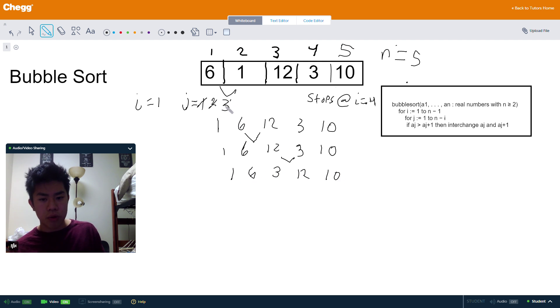Okay. It does it one more time. j is 4. It compares 12 and 10. And it sees that it does need to be swapped.